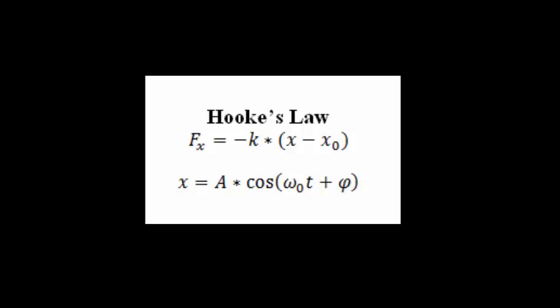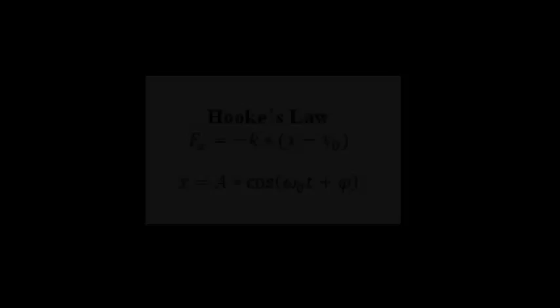From Hooke's law, we can derive an equation for the position of the mass. The position of the mass is equal to the amplitude of the oscillations times the cosine of the natural frequency — which is the square root of k over m, the spring constant over the mass — times the time, plus a phase displacement. Notice that the amplitude and phase displacements are the result of the initial position and time.